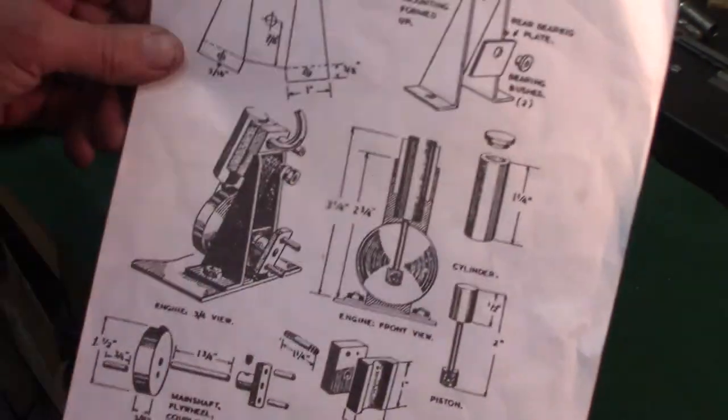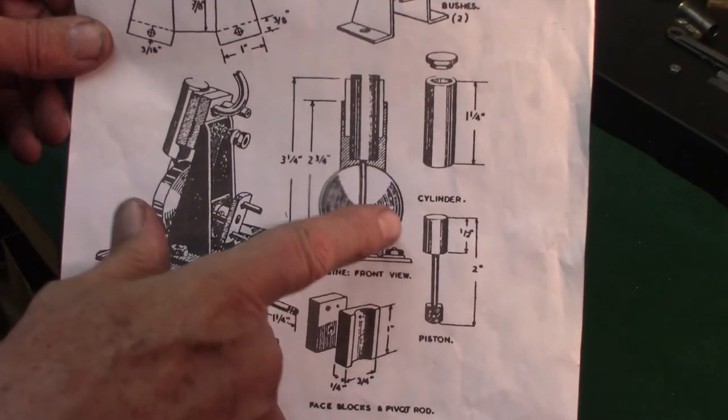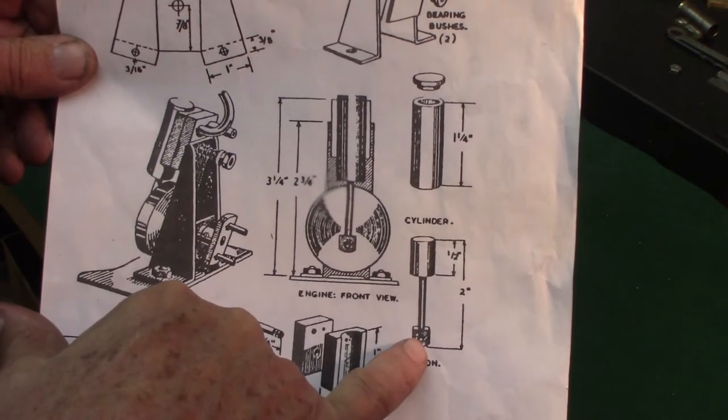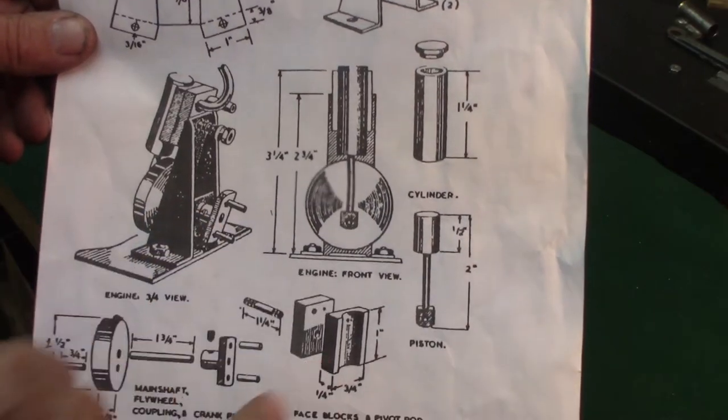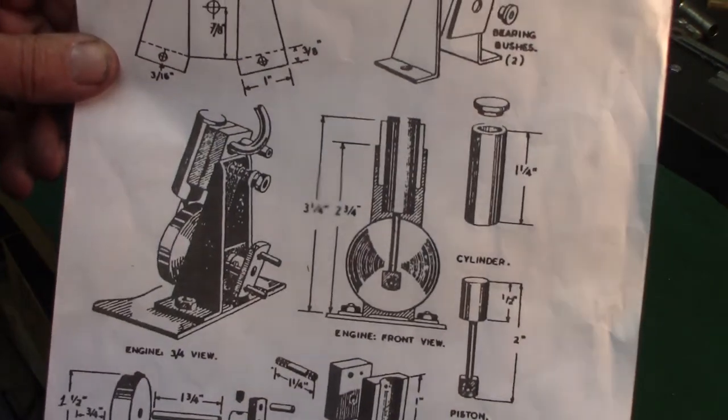This is the entire drawing. It's missing a lot of dimensions. For instance, the bore and stroke. The size of these holes. The size of the shaft. There's no shaft sizes in here. That just shows a picture. I used an eighth inch.